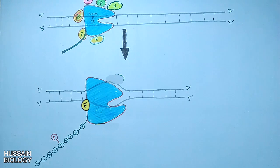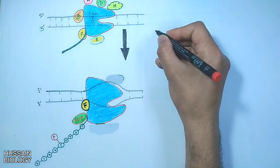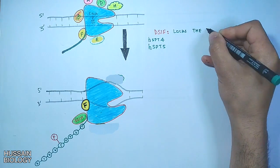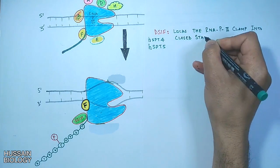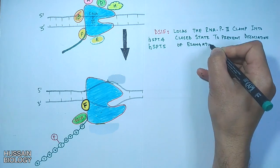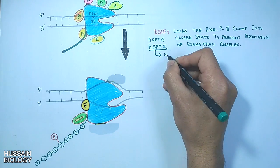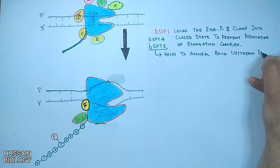Now let's see how these elongation factors bind and regulate the transcription. First we see the DSIF, DRB sensitivity inducing factor. It has two subunits, SPT4 and SPT5 subunit. This factor locks the RNA clamp into the closed state to prevent dissociation of elongation complex.